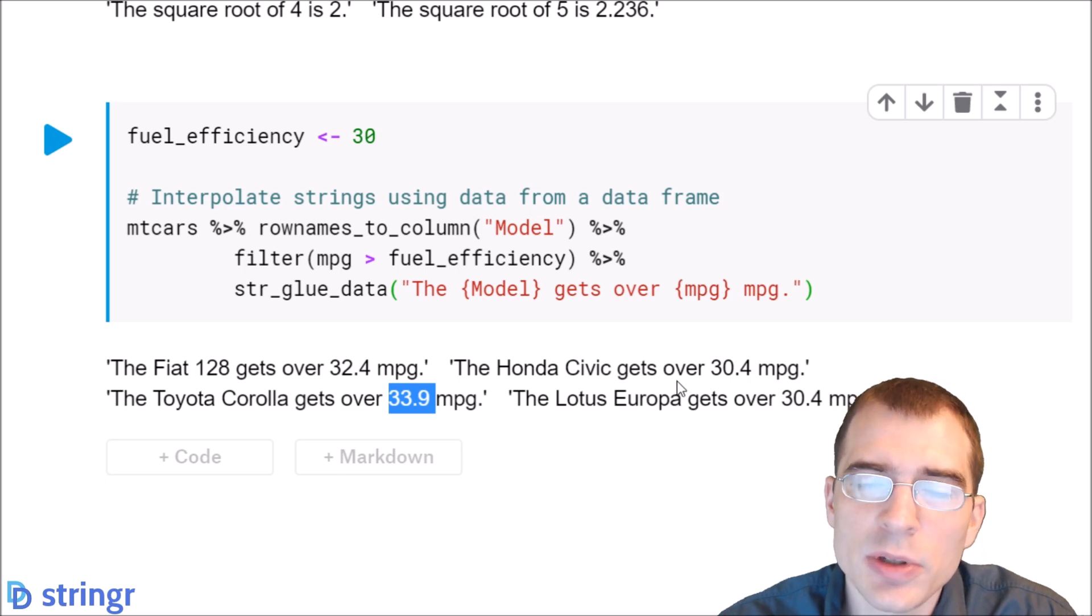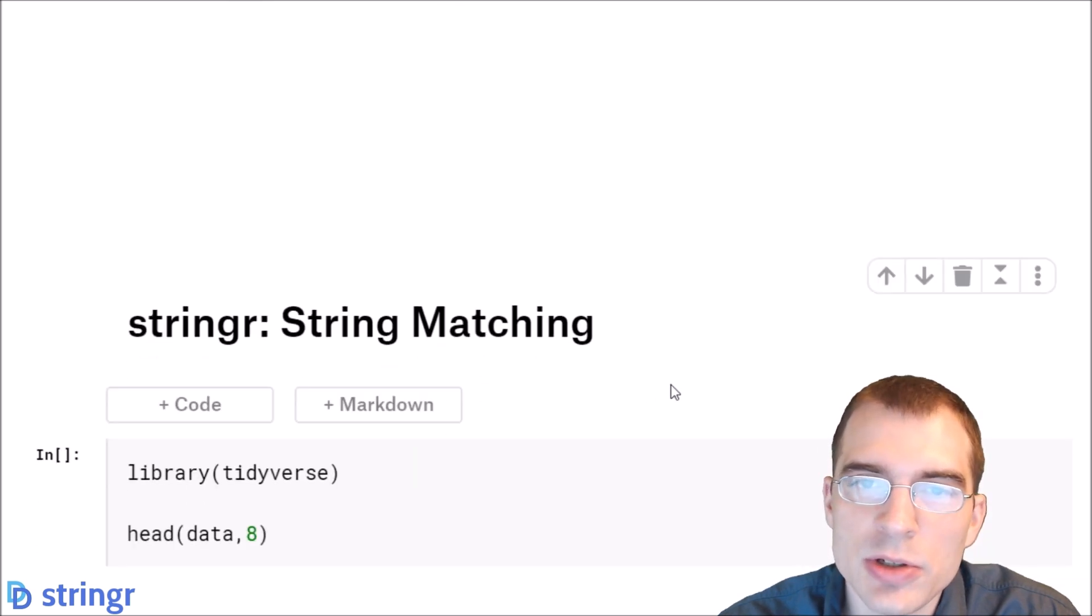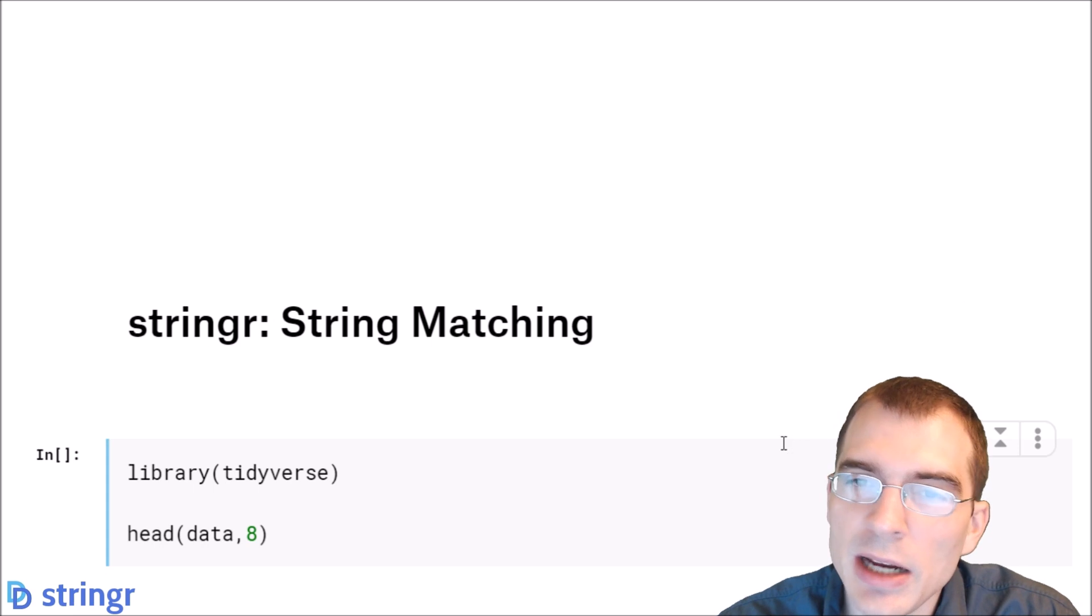That's the basics of doing string interpolation and formatting using the stringr library. In the next lesson, we're going to learn how to do string matching, which is essentially detecting whether certain substrings or patterns exist within strings. So I'll see you next time.